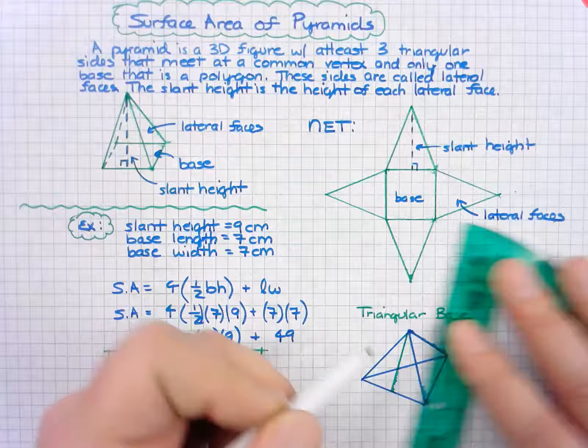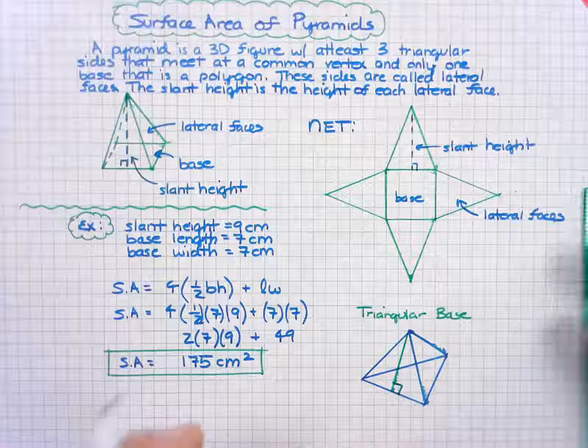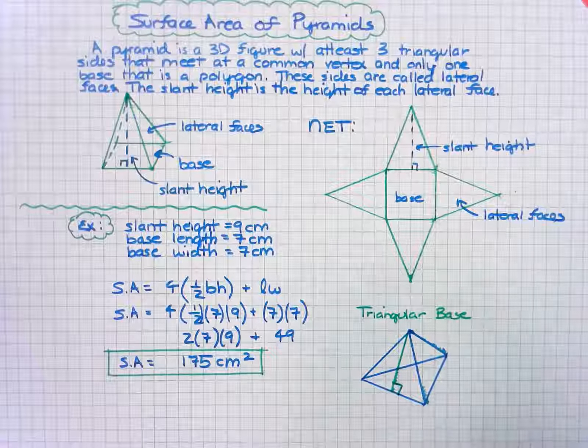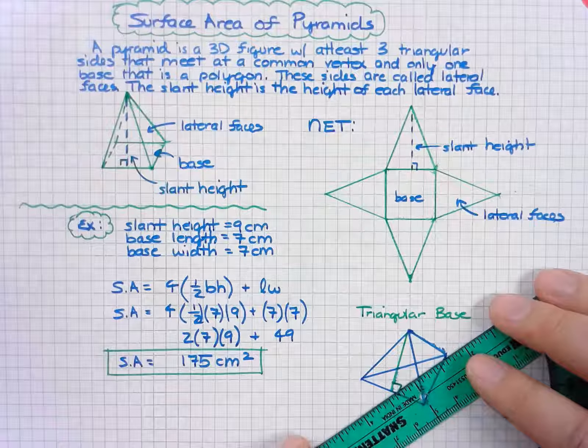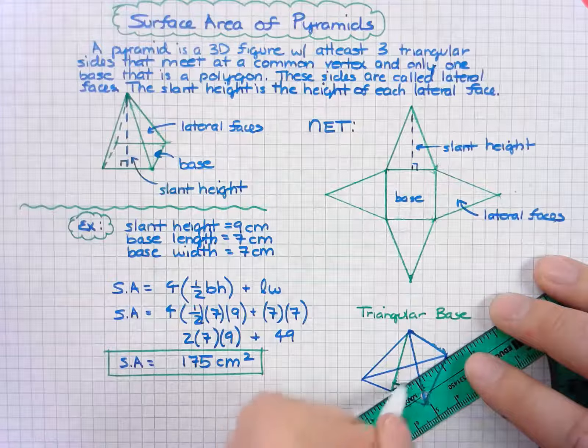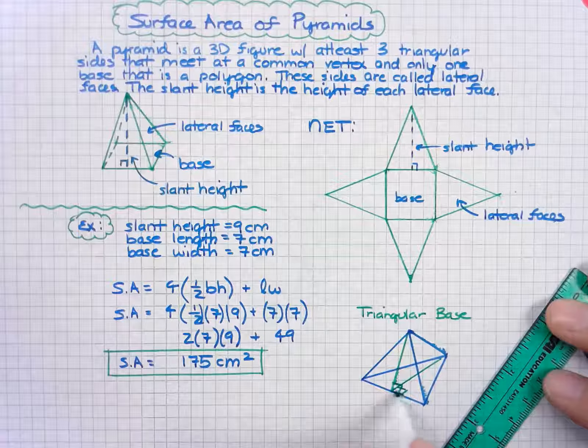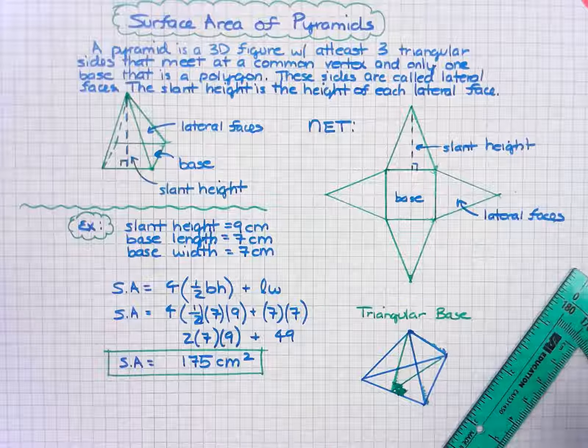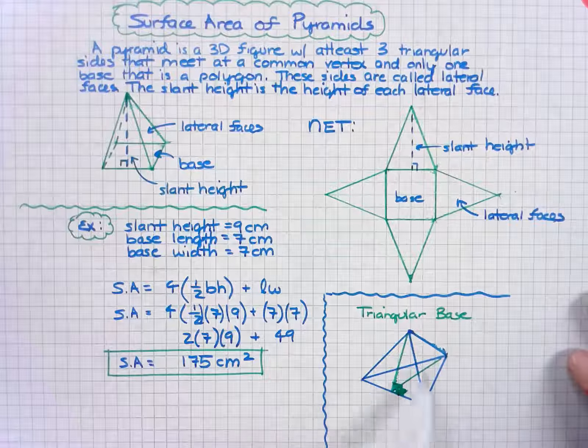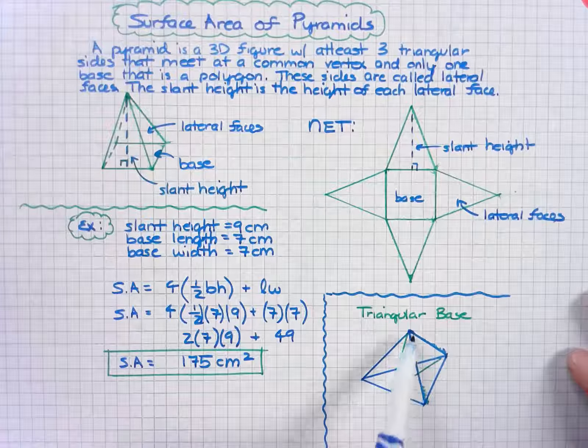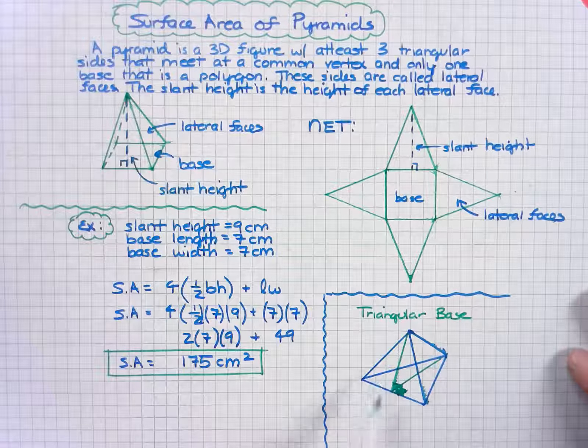The slant height intersects at a 90 degree angle. The base also has one that intersects at a 90 degree angle. In this case, you will have four triangular areas that you need to find and then add together.